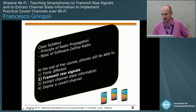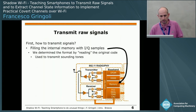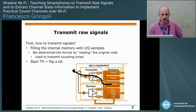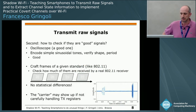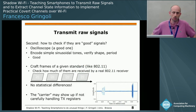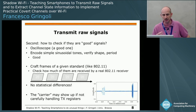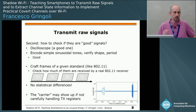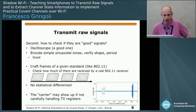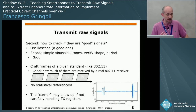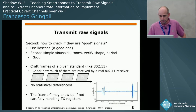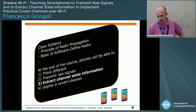Transmitting raw signals is straightforward: you store IQ samples into memory and start transmitting by simply flipping a bit in one register. We evaluated signal quality by transmitting sinusoidal waves captured with an oscilloscope — they were correctly shaped with the right period. Then we moved to the more challenging task of designing 802.11 packets with real encoding such as OFDM or DSSS. We transmitted these packets and compared reception at a standard receiver against real packet transmission, finding no statistical difference. This confirms it is truly a software-defined radio platform.